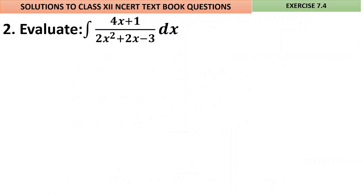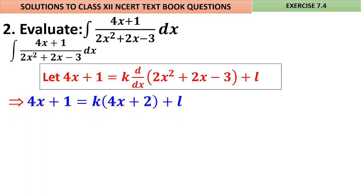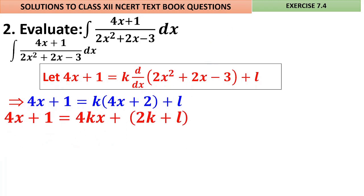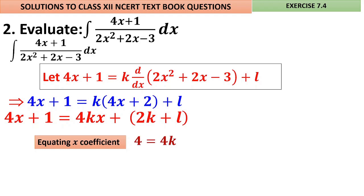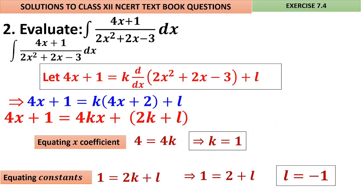Problem 2: The coefficient of x² is other than 1. No need to take it outside. Start directly: numerator = k·d/dx(quadratic) + l. So 4x+1 = k·(4x+2) + l = 4kx + (2k+l). Equating x coefficients: 4 = 4k, so k = 1. Equating constants: 1 = 2k+l = 2+l, so l = −1.